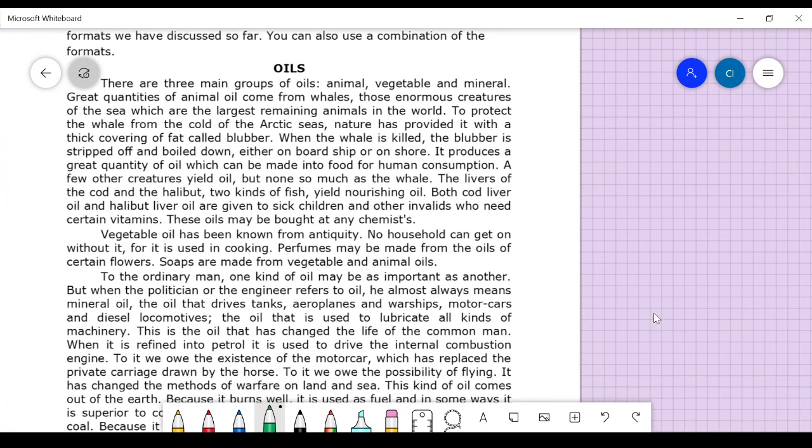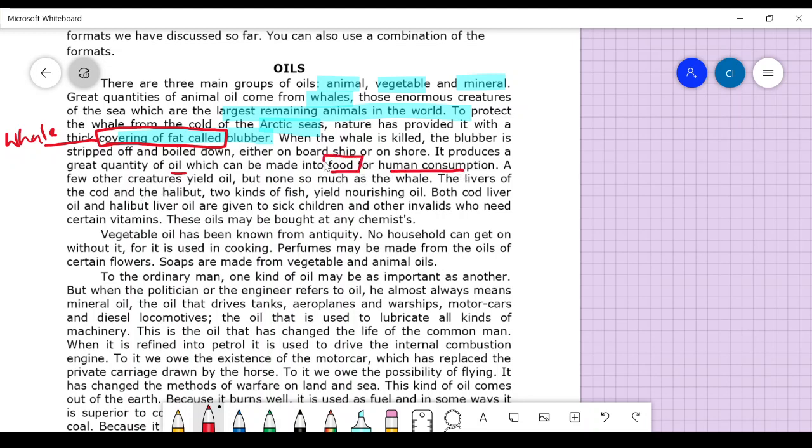Now task three: read the following passage and underline the main points. There are three main groups of oils: animal oil, vegetable oil, and mineral oil. Great quantities of animal oil come from whales, enormous creatures of the sea. To protect the whale from the cold Arctic seas, nature has provided a thick covering of fat called blubber. When the whale is killed, the blubber is stripped off and boiled down, producing oil for human consumption.